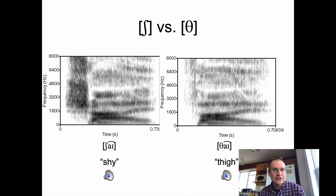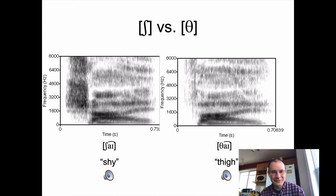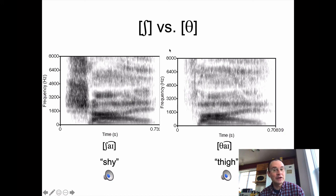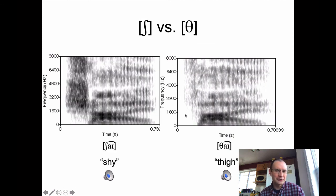We can also look at Esch versus Theta. Esch again shows sibilance with high intensity at the higher frequencies. Theta looks a lot like F actually. If you pay attention to just the sound of those fricatives in a raw phonetic way, they sound very similar. In fact, when speech perception tests look at confusability of consonants in English, F and Theta tend to be the most confusable consonants at a raw perceptual level. They look very similar in a spectrogram too — both weak across the board and fairly evenly distributed, though dropping off at the bottom.